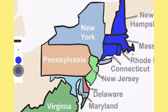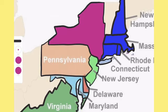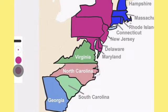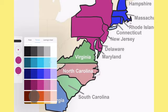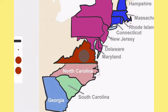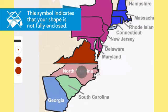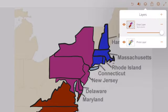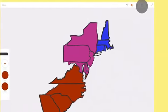I change my color so I can fill the mid-Atlantic colonies. And again, I change the color and bucket fill the southern colonies. The photo layer is no longer needed, so I click the eye icon to hide it. With the photo layer hidden, I can save my drawing.